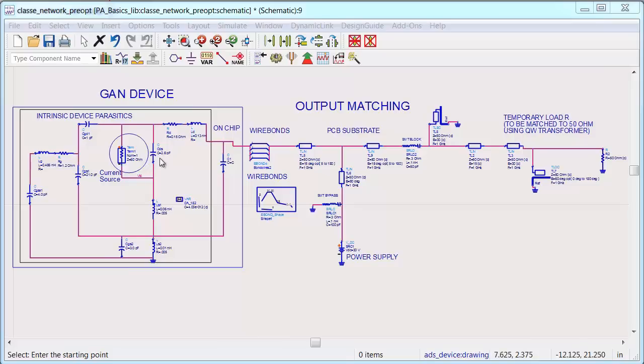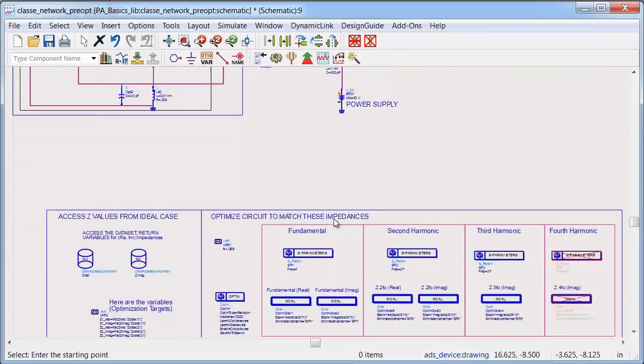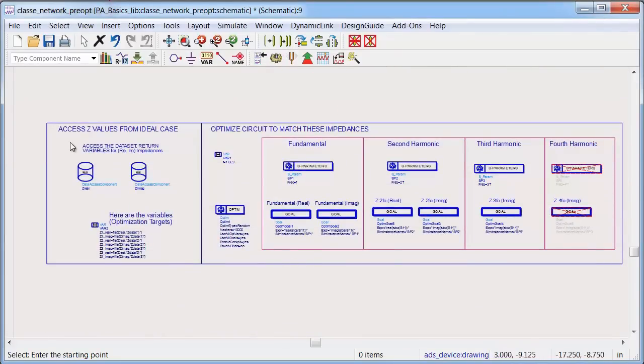So in this example, the class E capacitor comes partially from the device parasitic capacitance and partially from an on-chip capacitor that I added. And then I go off-chip using wire bonds, and I did the rest of the match using transmission lines. And I set this simulation up to automatically import the target impedances from the verification bench that I used before, and used these as optimization goals.